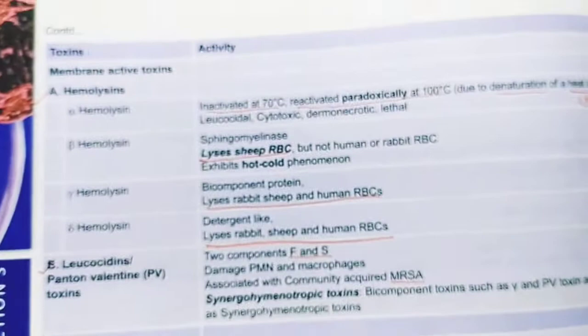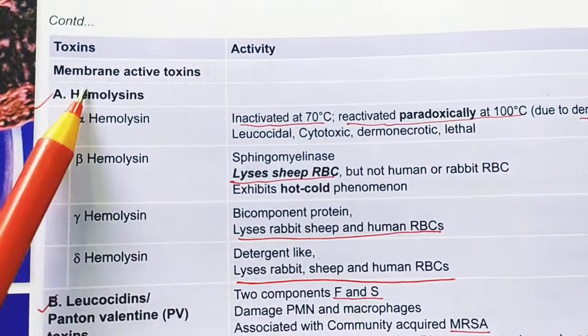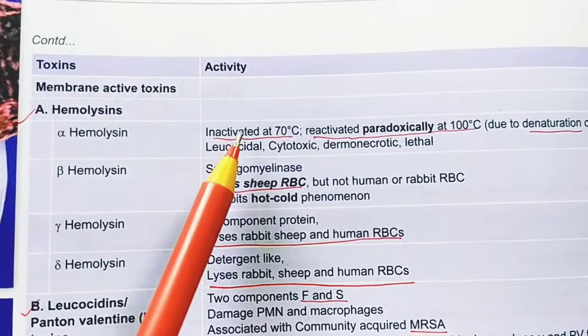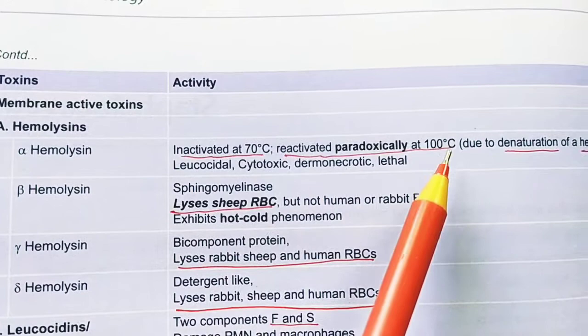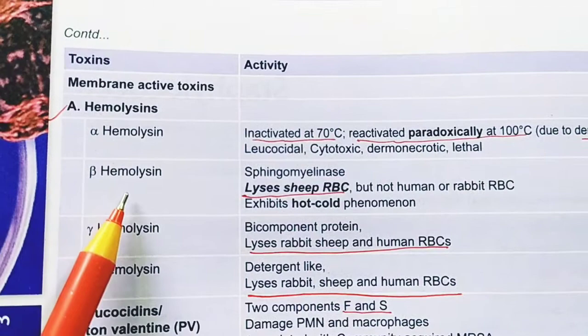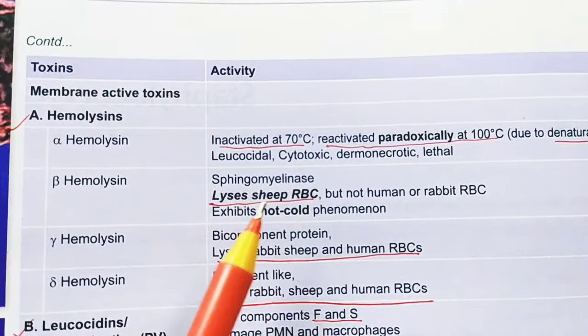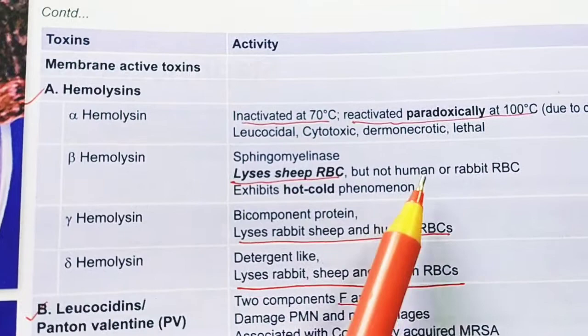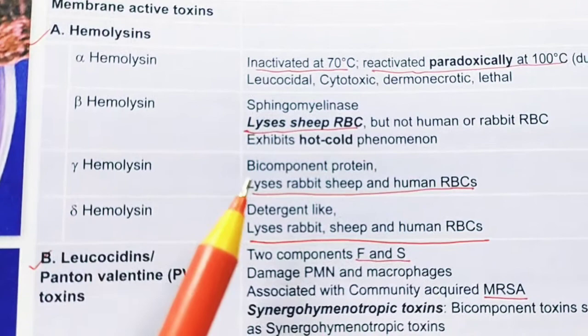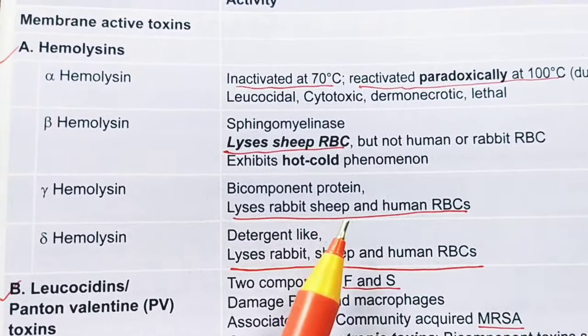The membrane-active toxins include: alpha hemolysin, which is inactivated at 70°C but paradoxically activated at 100°C; beta hemolysin, which is a sphingomyelinase that lyses sheep RBC but not human or rabbit RBC; and gamma hemolysin, which lyses not only sheep RBC but also rabbit and human RBC. So gamma hemolysin acts on all three — sheep, rabbit, and human RBC.